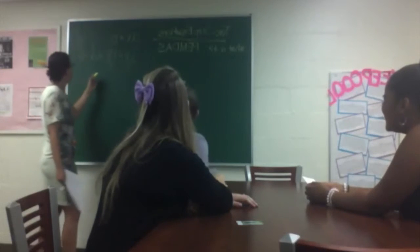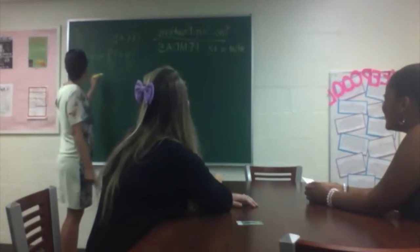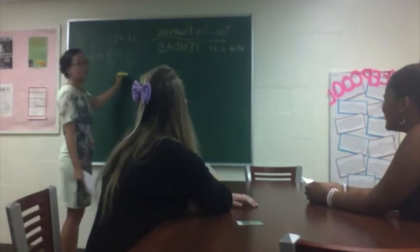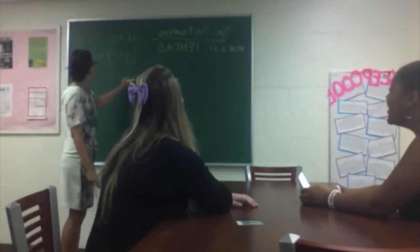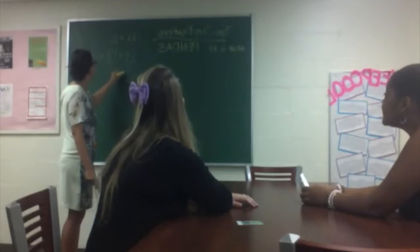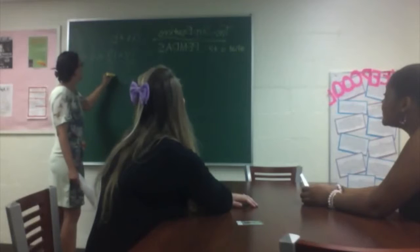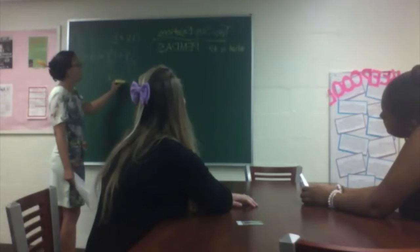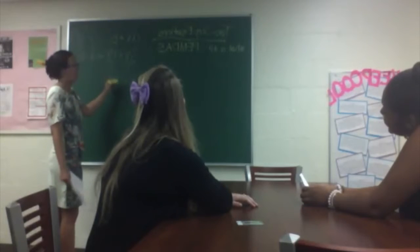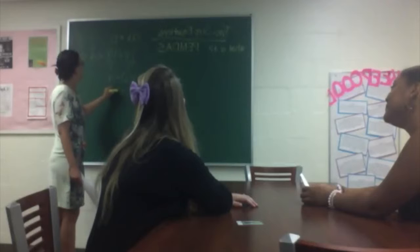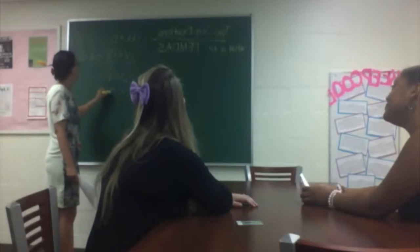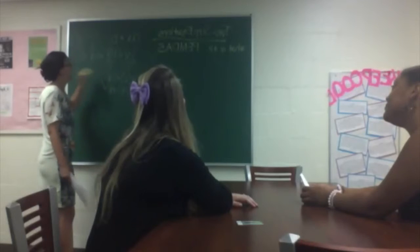X equals 6. And then you have to check it, right? So you have to substitute 6 for X. It's going to be 3 times 6 equals 18. What's 3 times 6? 18. So then we're right.